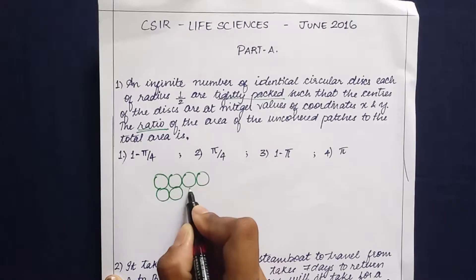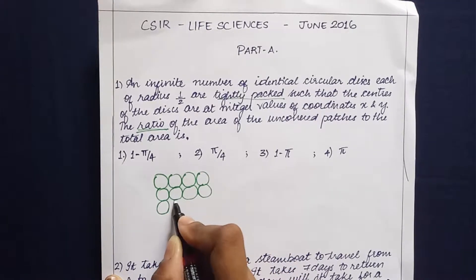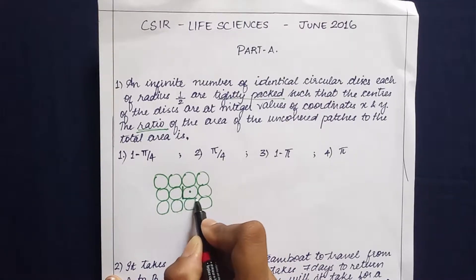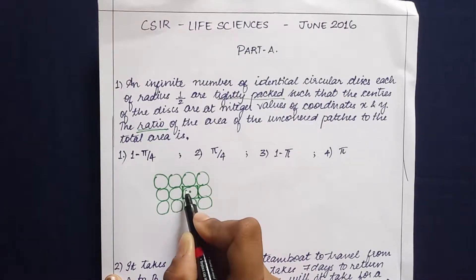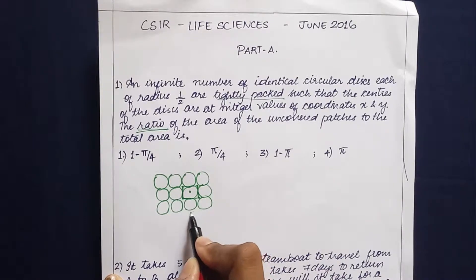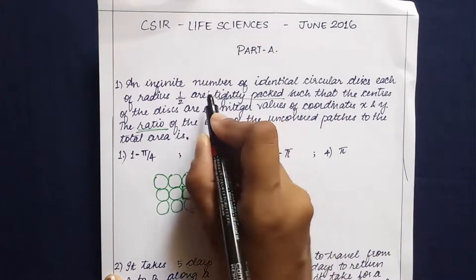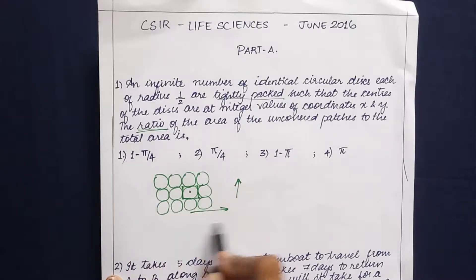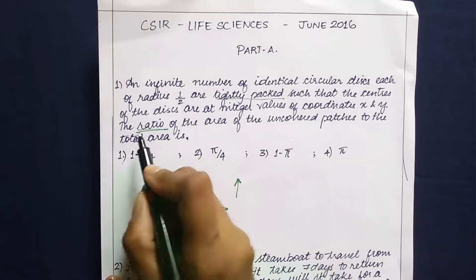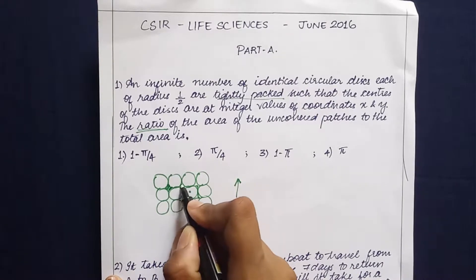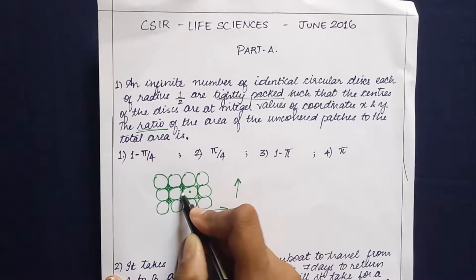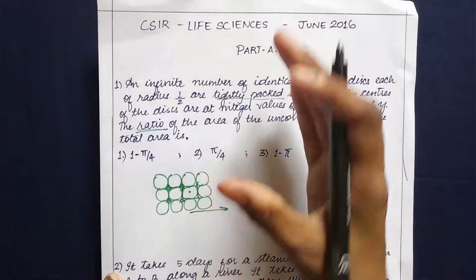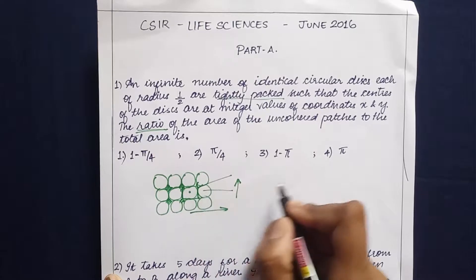Consider a space where many such circular disks are packed. For this circle, let's draw a square around it. The circular arrangement is continued both in the x and y directions to an infinite number of distances. We have to find the ratio of the uncovered patches to that of the total area — the uncovered regions versus the total area of the square.